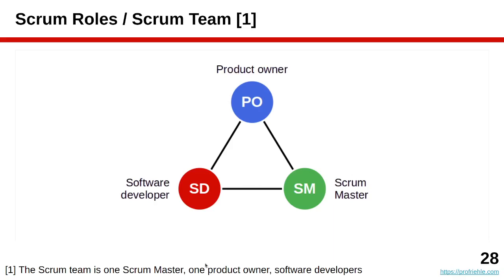Scrum relies on three main roles: the Scrum Master, the Product Owner, and the Software Developer. These are roles, so multiple people can play them. One person can play multiple roles, though it's not always advisable for a software developer to also be a Scrum Master or Product Owner. In AMOS we have one Scrum Master, two Product Owners, and six software developers in the default team — nine people total, which is a comparatively large team. Most Scrum teams are smaller.